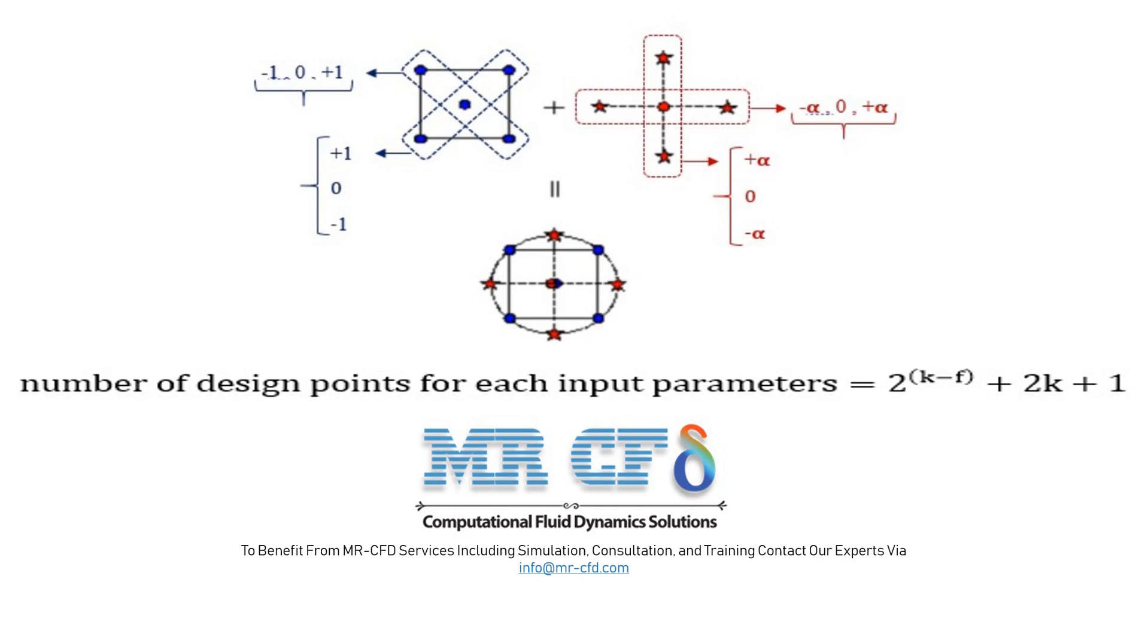And the blue circular points represent the level positive 1 and level minus 1 corresponding to two factors, which represents the same term 2 power (k minus f) that is equal to 4. The set of these states for the two factor model, as shown in this figure, is equal to 4 plus 4 plus 1 equal to 9.